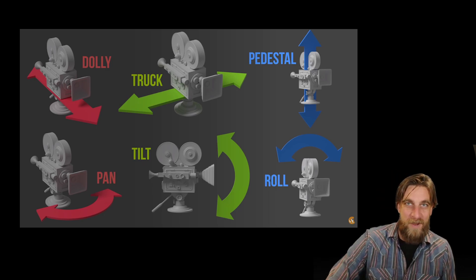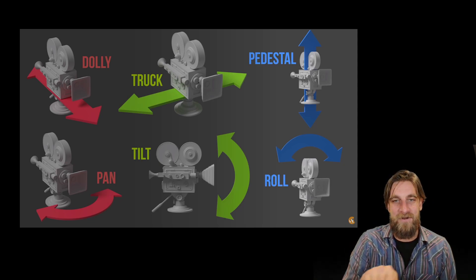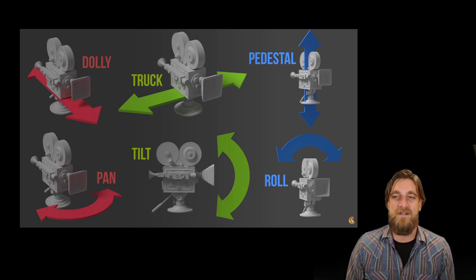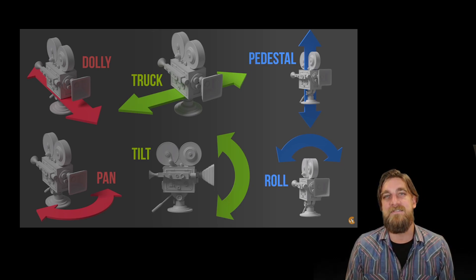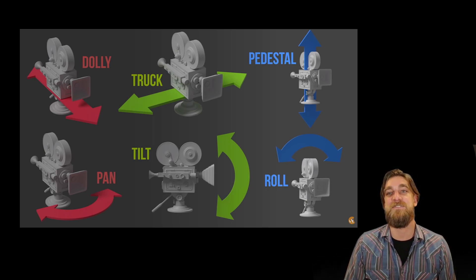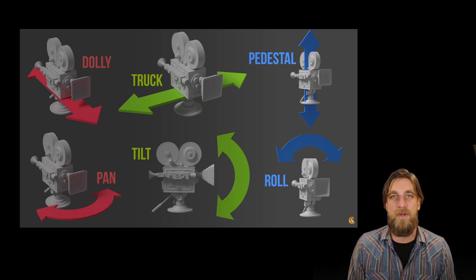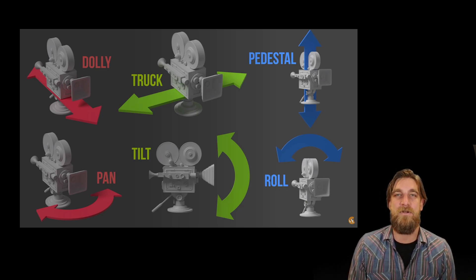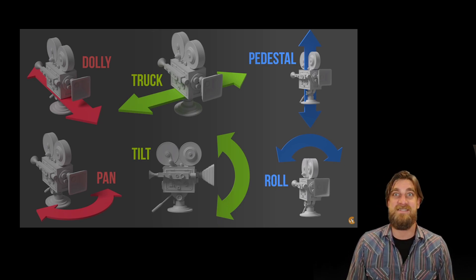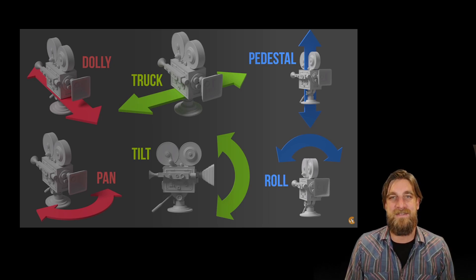A roll is another fixed-position movement where you roll the camera from left to right as opposed to turning it, which achieves very different effects. Some films by Martin Scorsese use the roll. It's a little bit more challenging to accomplish, especially with a tripod, because that rolling motion is harder to smoothly achieve, but it can still be really effective.